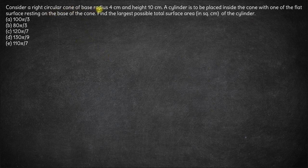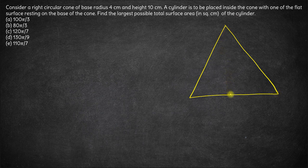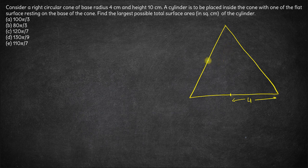Here we have considered a right circular cone of base radius 4. The cone is something like this but I am drawing it in 2D. Now, there has to be a cylinder which is placed inside this cone. The cylinder can be either a wider cylinder with a larger radius or a tall cylinder with a smaller radius. We want to find the dimensions such that the total surface area of the cylinder is maximized.